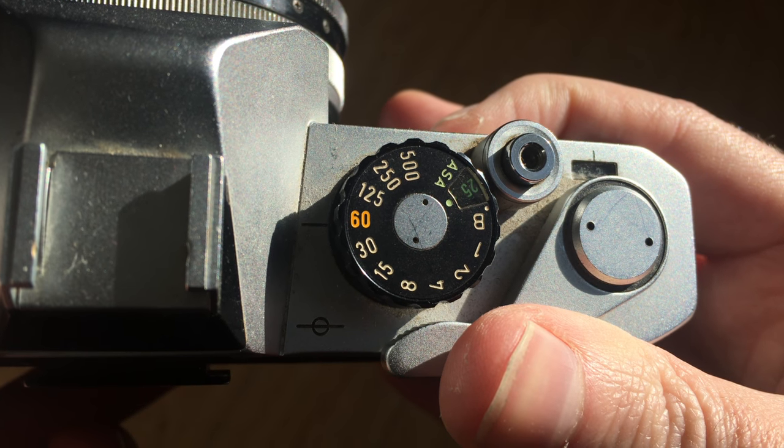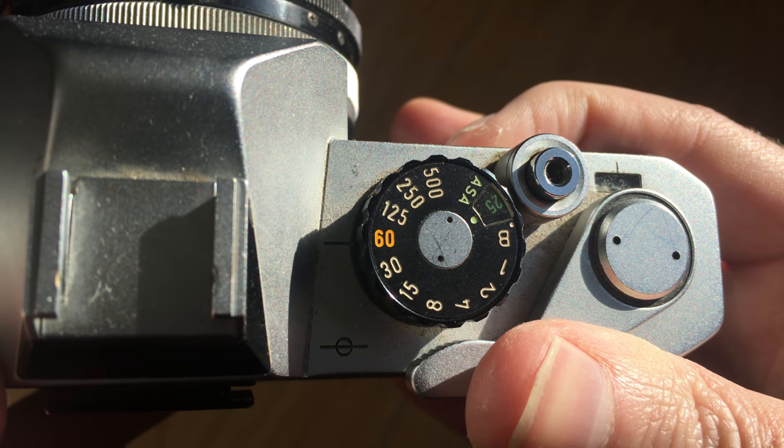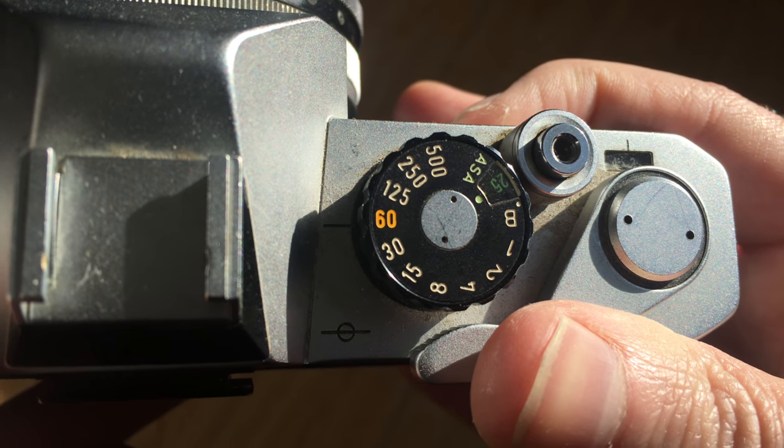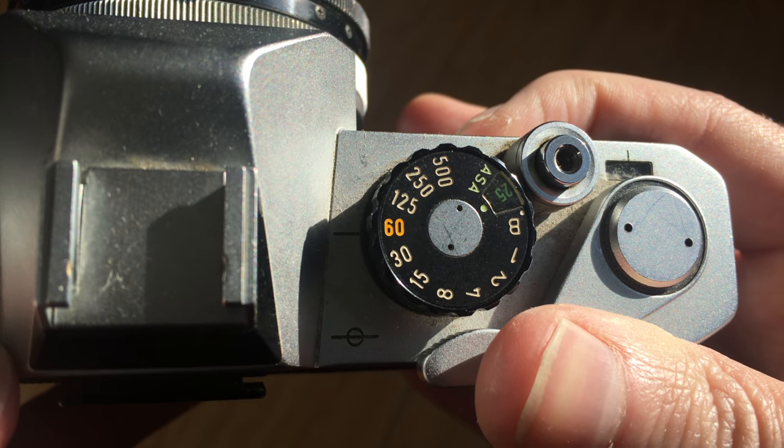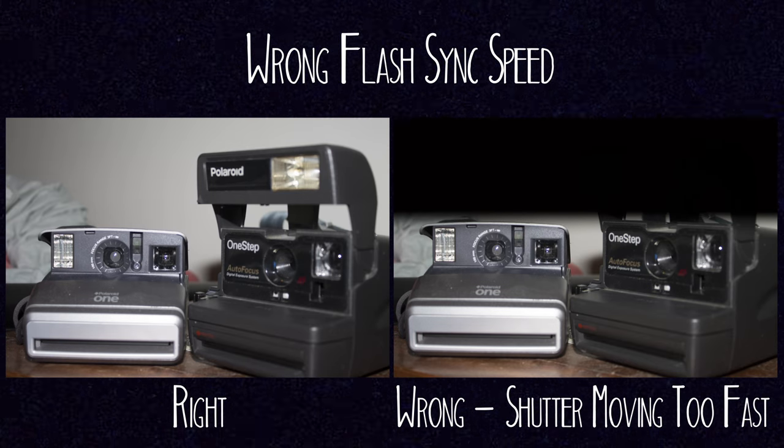On a lot of film cameras, you will have a number on the dial that is a different color from the other ones. This represents the maximum shutter speed you can use when shooting with a flash connected to your camera — this is called your flash sync speed. On a lot of cameras it's usually 1/60th of a second, which is what you want to set your shutter speed to when you have a flash attached. If you go for a faster shutter speed than 1/60th, the shutter won't be open long enough to capture your image while the flash is going off, and usually you come out with images that look a little bit like this.